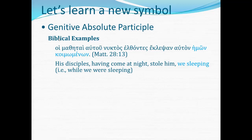'His disciples, having come at night, stole him — we sleeping.' Can you see that the 'we' has no grammatical function in the main clause? 'His disciples, having come at night, stole him' — there's no room in that main clause for the 'we' referring to the soldiers. So hēmōn is genitive absolute, the disconnected genitive. And then the participle koimōmenōn agrees with it, masculine, nominative, plural. Can you picture that in diagram form?